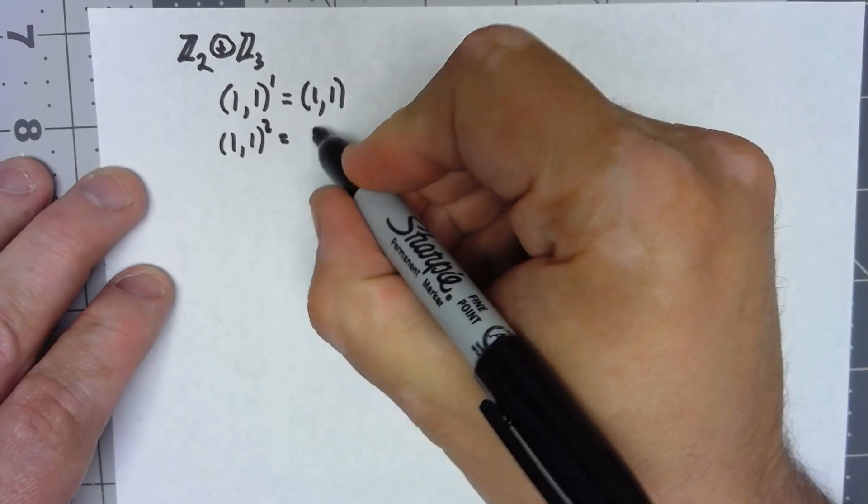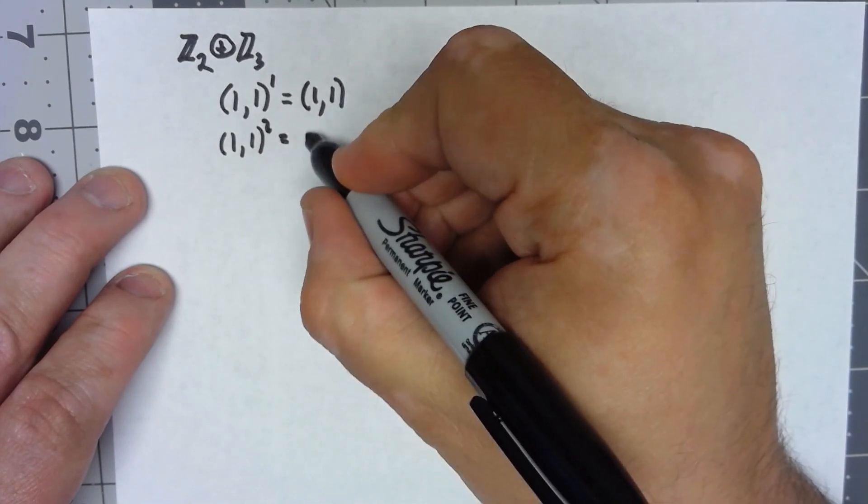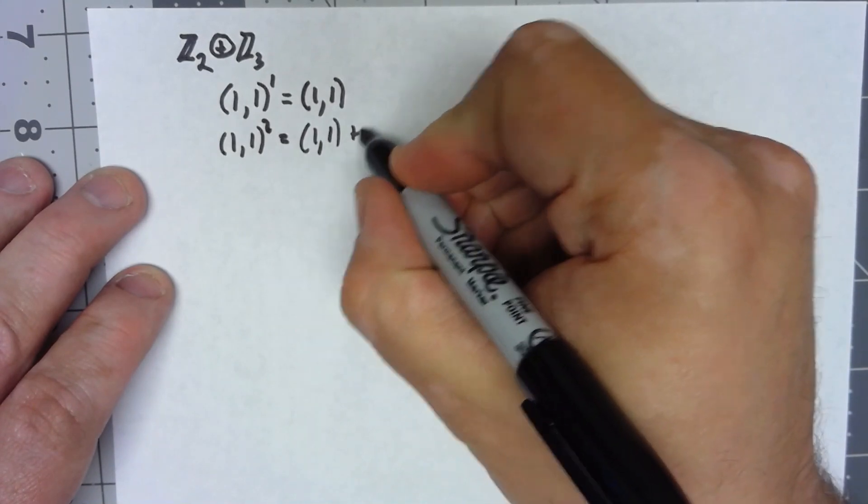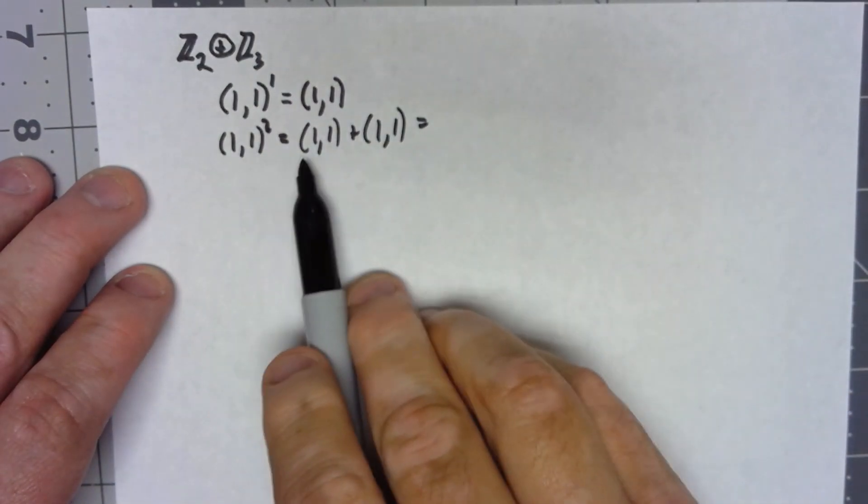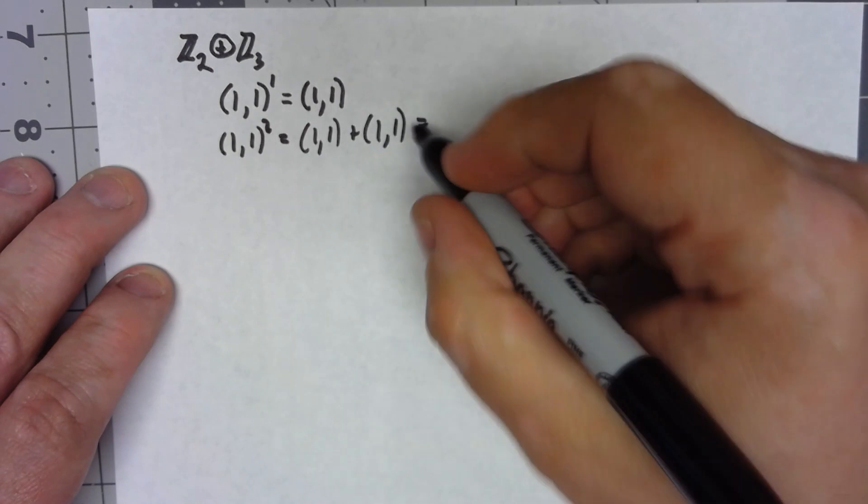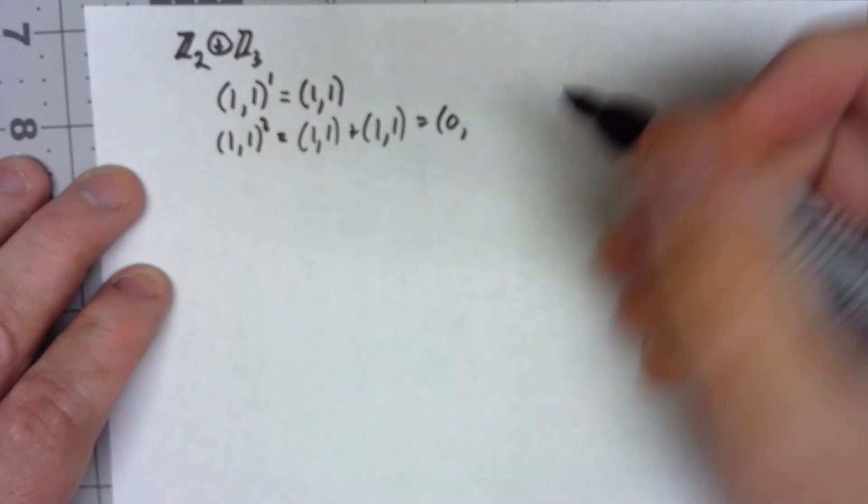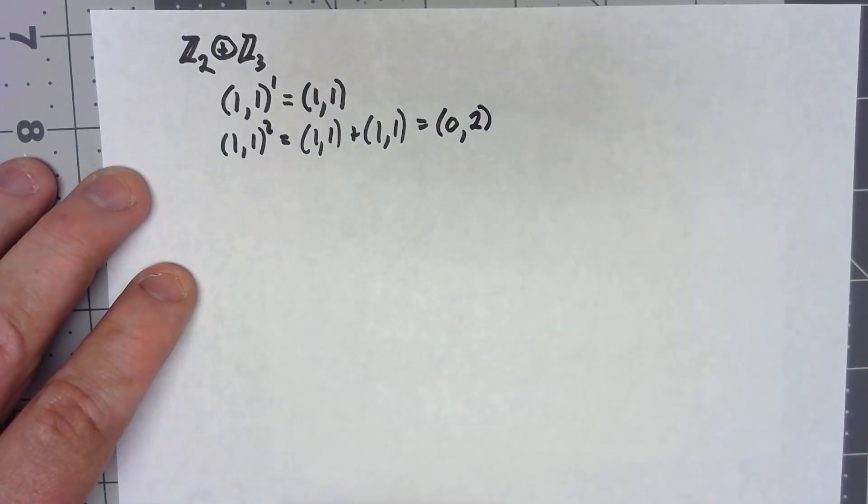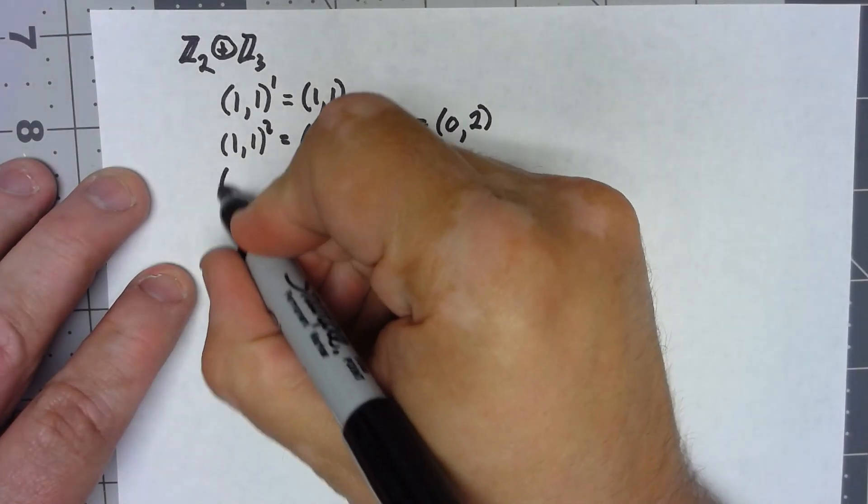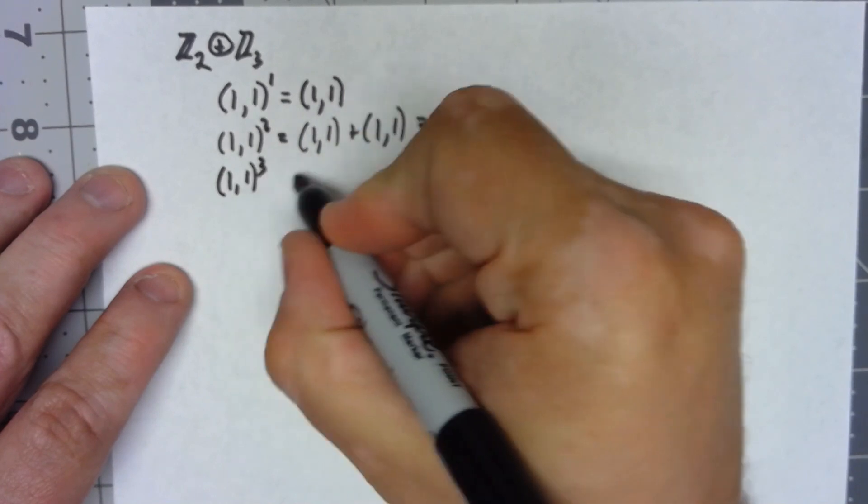We're going to get (1,1) plus (1,1). For the first element the operation is in Z2, that's going to give us 0, and for the second one we're going to get 2. (1,1) cubed.